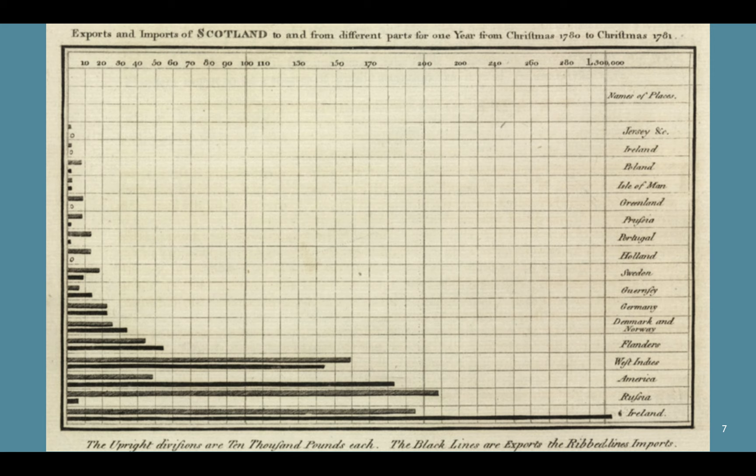Here is a bar graph showing the exports and imports of Scotland to and from different parts of the world for one year, from Christmas 1780 to Christmas 1781. The different locations are listed on the right, and the bar graph shows the different elements charted on a horizontal axis. At the very bottom, Ireland has the highest value.